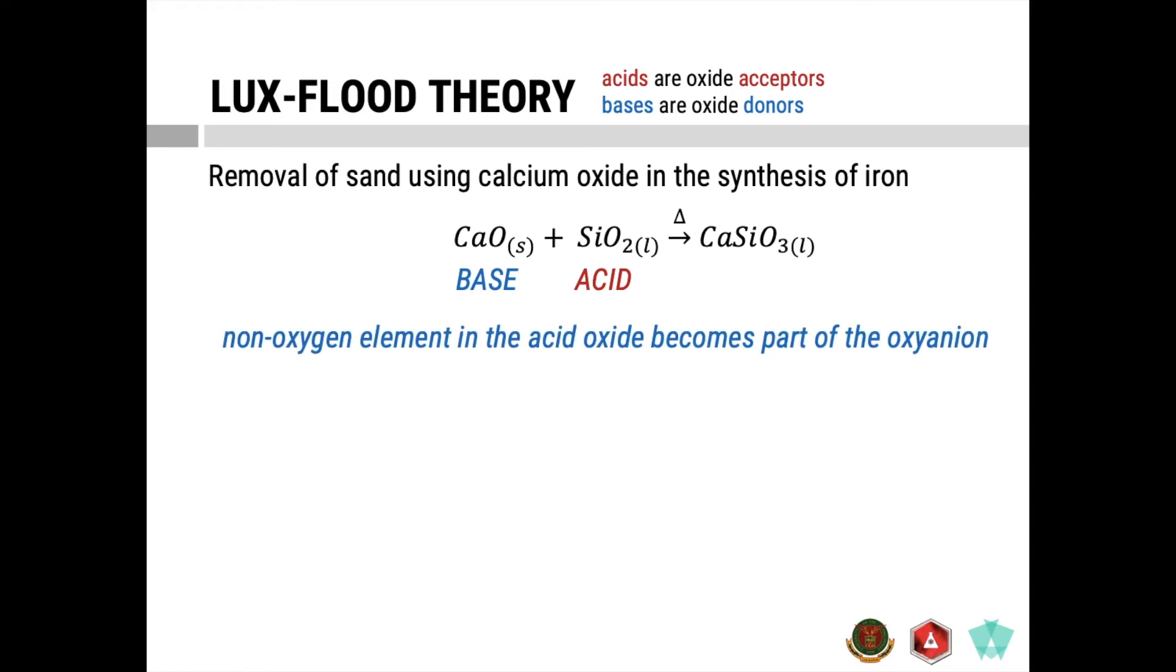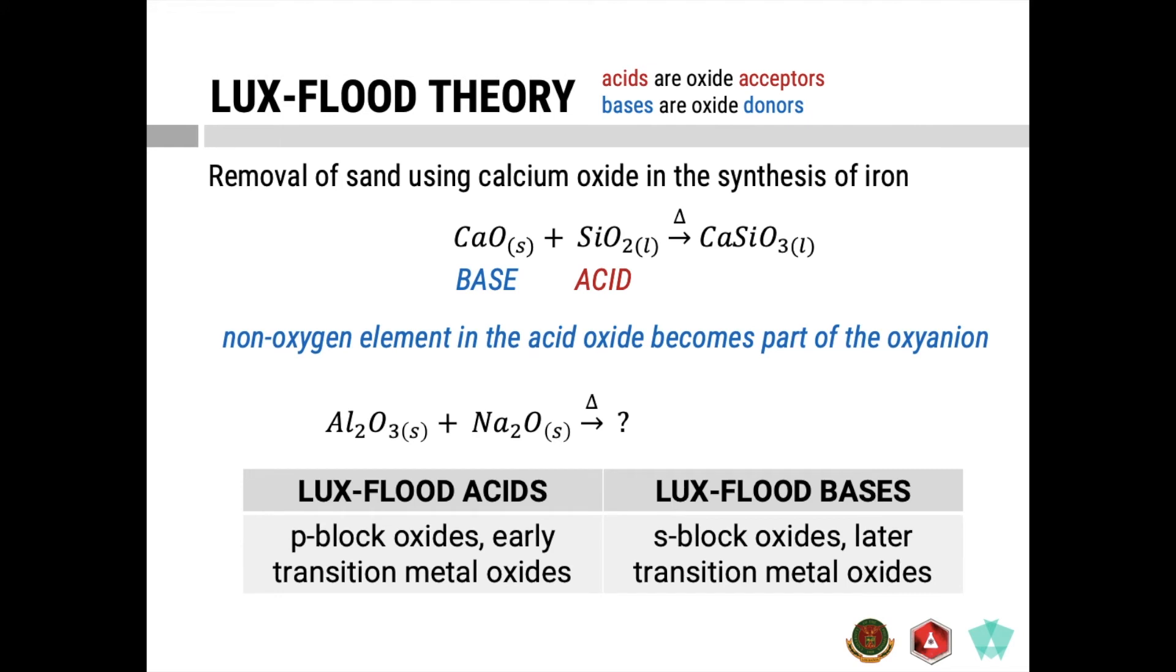So if you have here, say, aluminum oxide and sodium oxide in the presence of heat, what is the expected product? Which between the two is the Lux-Flood acid, which between the two is the Lux-Flood base? So here is a general guide on how you can determine which is the acid and which is the base. So a Lux-Flood acid is typically your P-block oxide, or it can be an early transition metal oxide, whereas a Lux-Flood base is an S-block oxide or a late transition metal oxide.